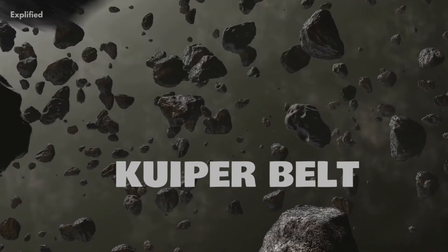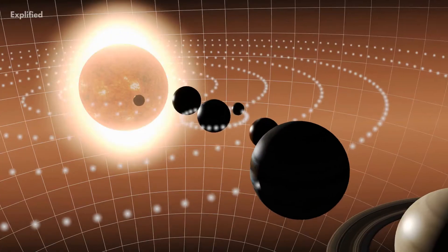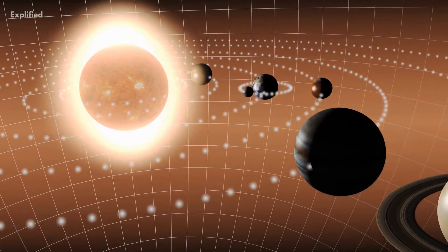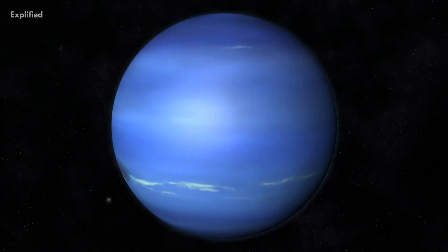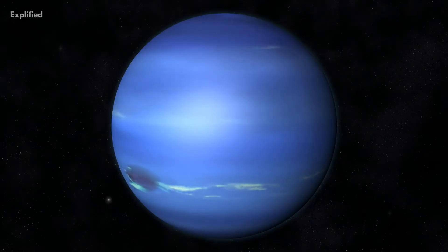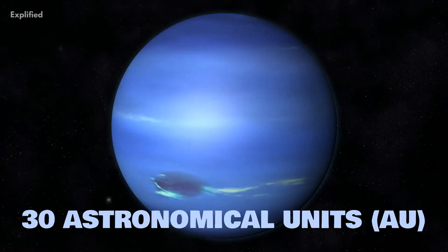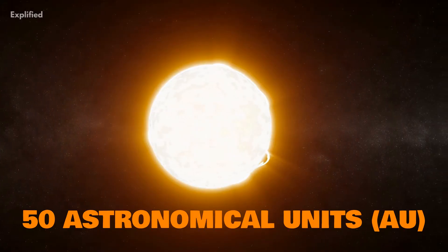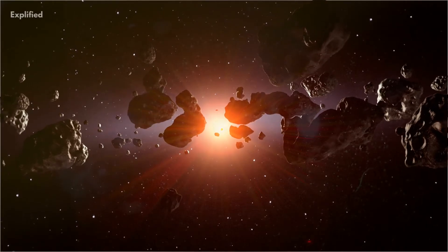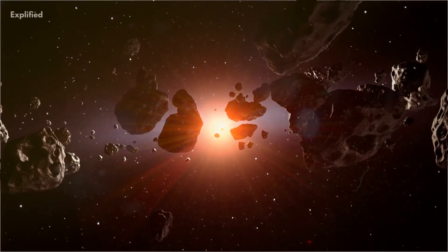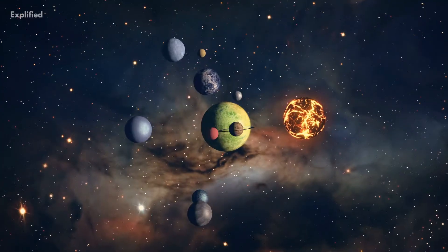The Kuiper Belt, also known as the Kuiper Edgeworth Belt, is a disc-shaped region found in the outer solar system, outside the orbit of Neptune. It extends from the orbit of Neptune at around 30 astronomical units, or AU, out to around 50 astronomical units from the Sun, and contains hundreds of millions of small icy bodies that are thought to be leftover material from the formation of the outer planets.